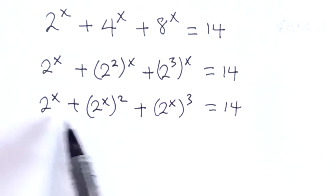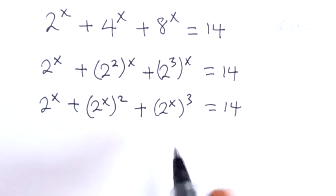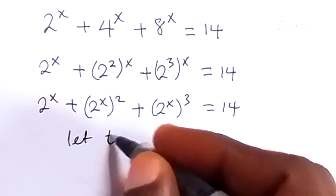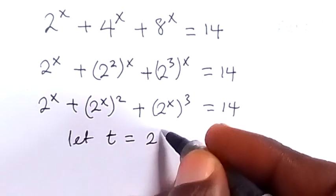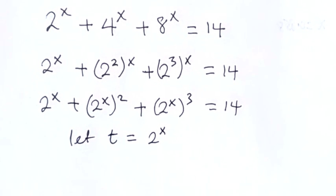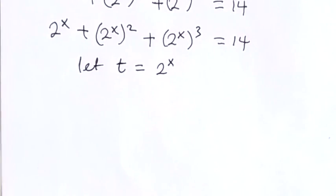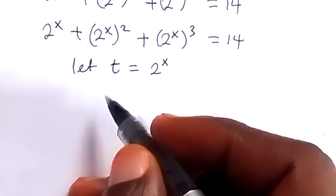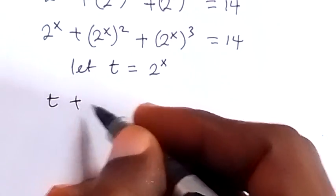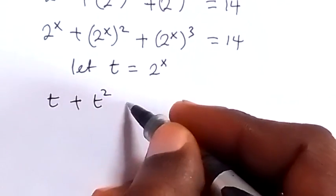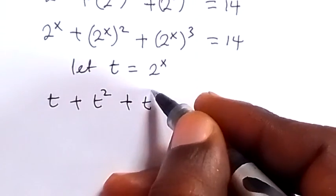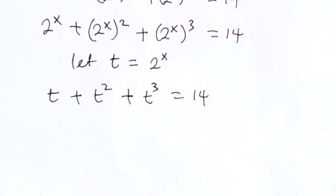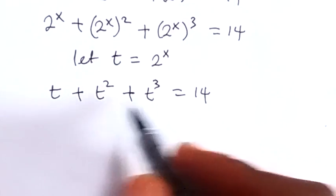We have 2 raised to power x common here, so let's use a substitution. Let t equal 2 raised to power x. When we write this again, we replace 2 raised to power x with t, and this becomes t plus t squared plus t cubed equals 14.